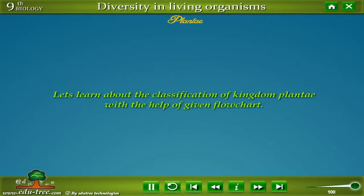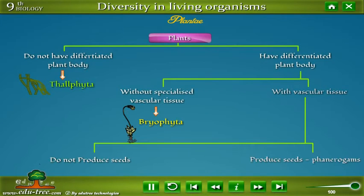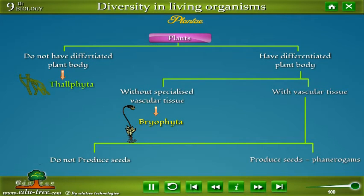Let's learn about the classification of Kingdom Plantae with the help of the given flowchart. All plants have been divided into two categories: plants which do not have a differentiated plant body, for example Thallophyta.